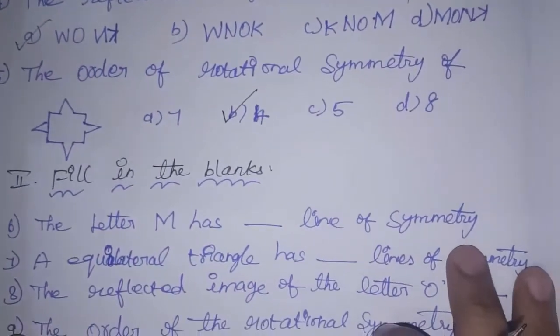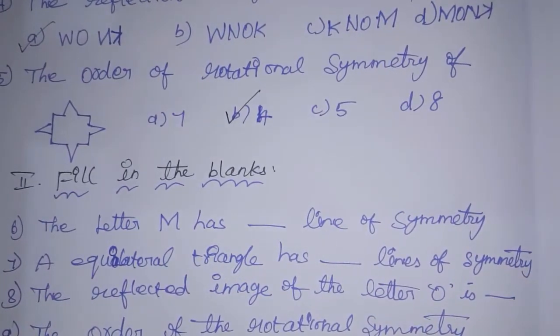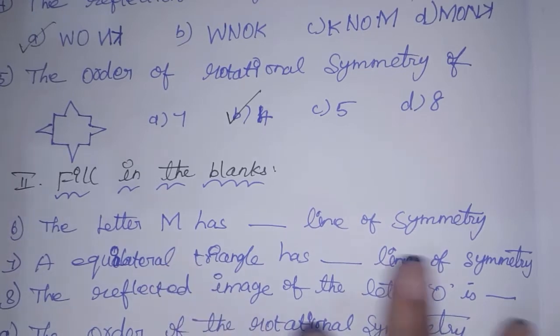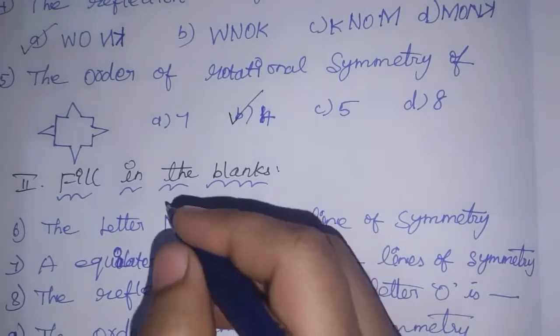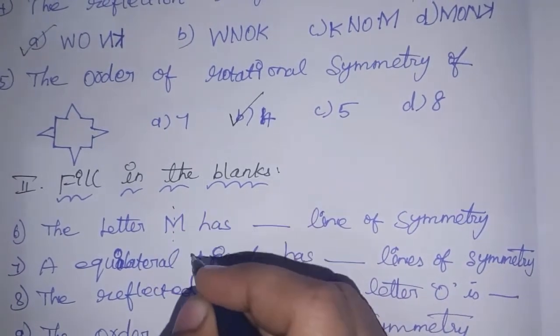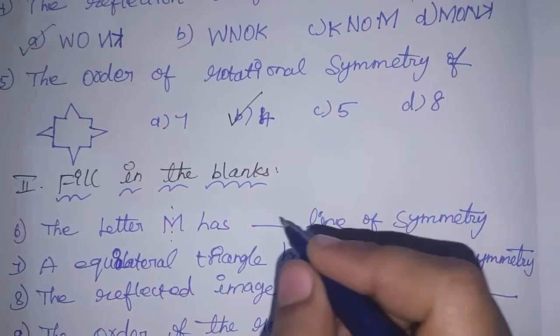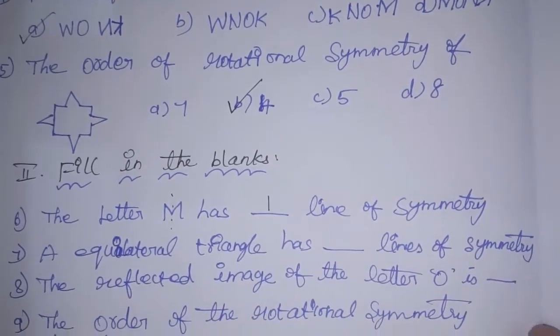Next, the second section — fill in the blanks. The letter M has a line of symmetry. If you look at this line of symmetry, you can draw it. So it has one line of symmetry.